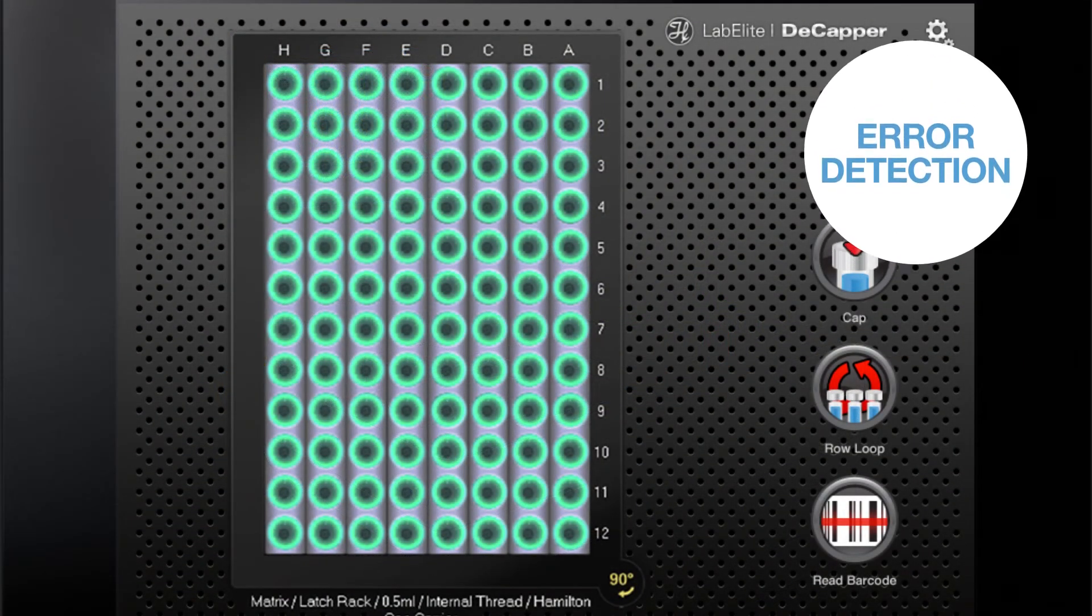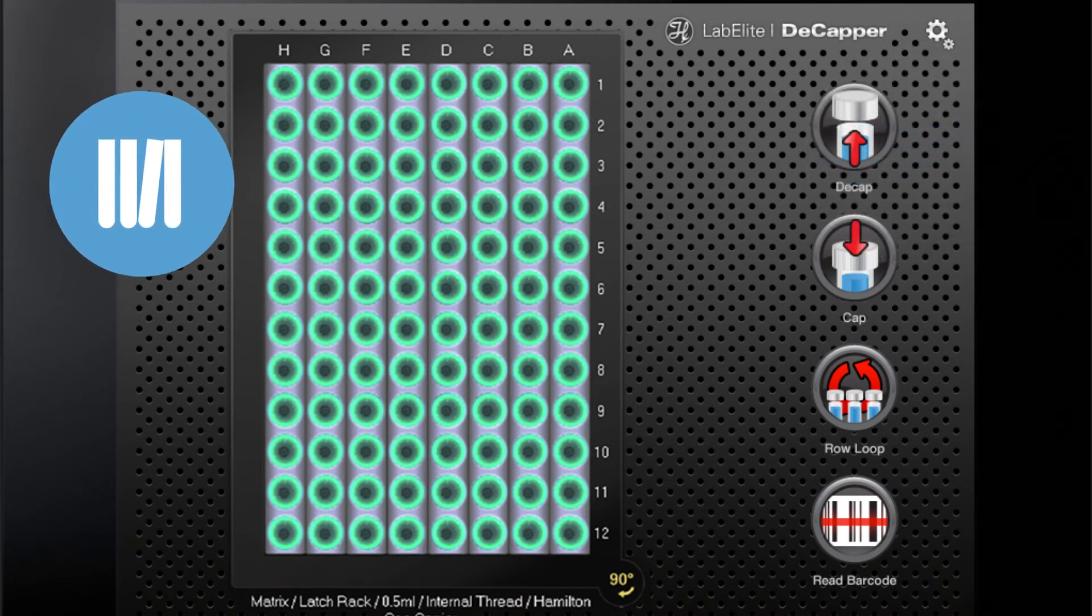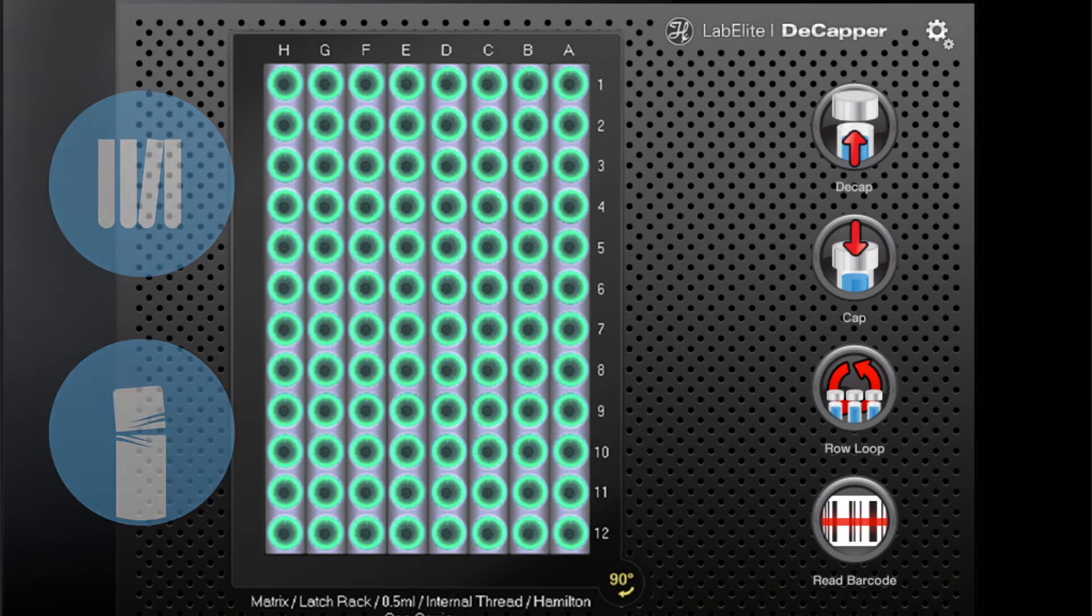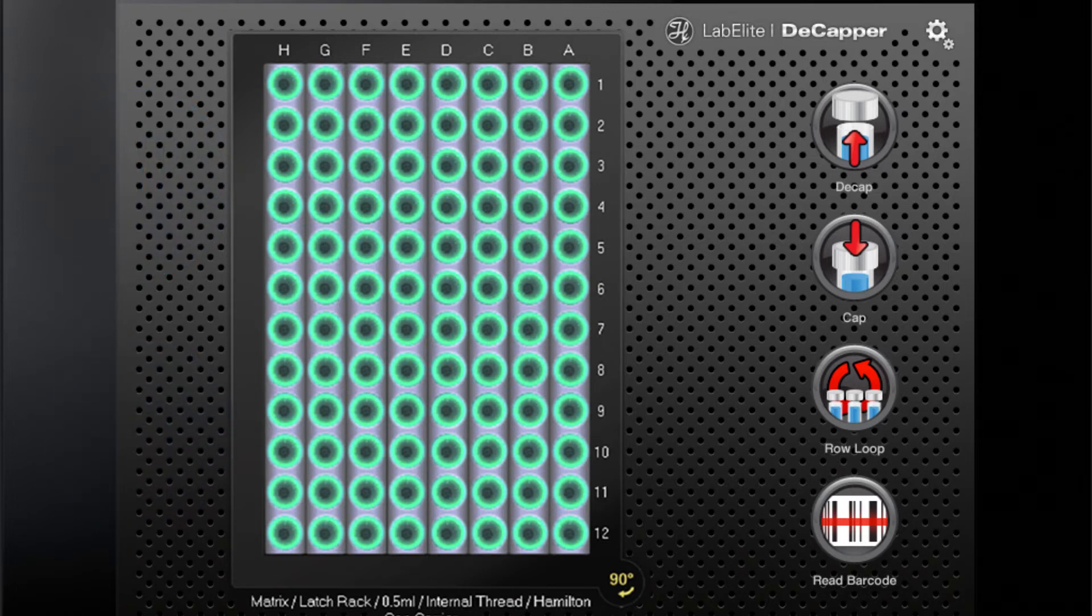Our Decapper features an automatic error detection function. Do you have a problematic tube? Or perhaps a cross-threaded cap? The device has feedback sensors in each channel that will alert you to any cap not torqued to the manufacturer's exact specifications.